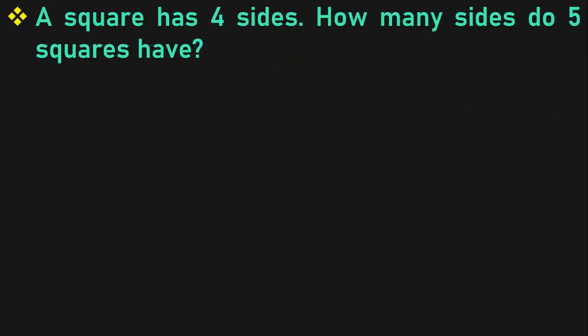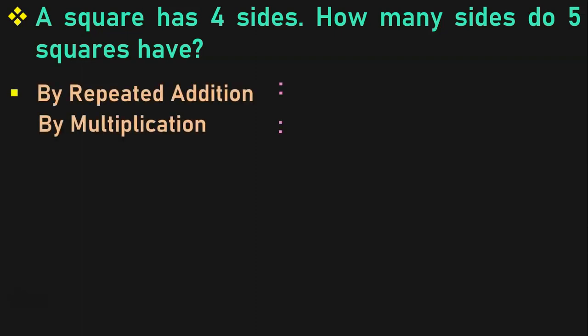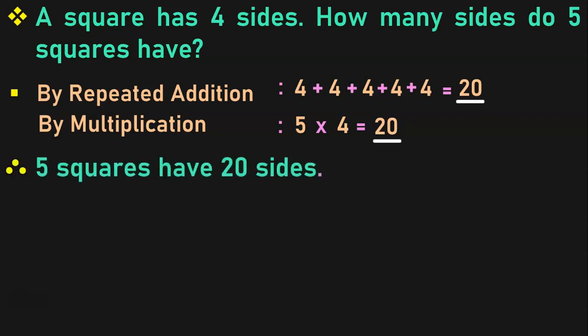A square has 4 sides. How many sides do 5 squares have? Very interesting sum, isn't it? By repeated addition method, we have 5 squares as the number of groups and each square has 4 sides. To find the total number of sides, we add 4 five times: 4 plus 4 plus 4 plus 4 plus 4. When 4 is added 5 times, you get the answer to be 20. In multiplication: 5 groups of 4 items each — 5 squares with 4 sides each — 5 fours are 20. Therefore, 5 squares have 20 sides.